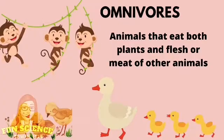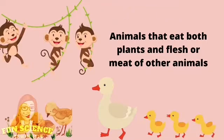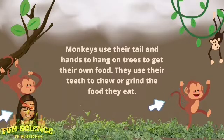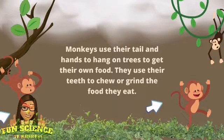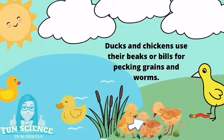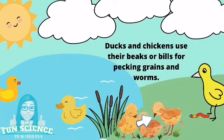There are animals that eat both plants and flesh or meat of other animals. They are called omnivores. Monkeys use their tail and hands to hang on trees to get their own food. They use their teeth to chew or grind the food they eat. Ducks and chickens use their beaks or bills for pecking grains and worms.